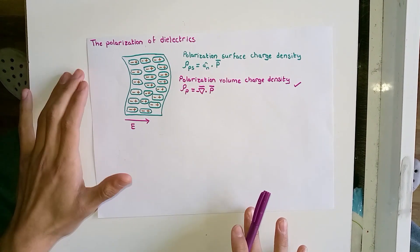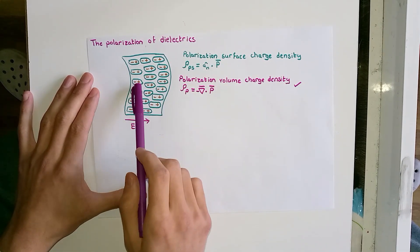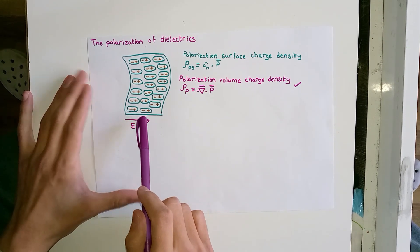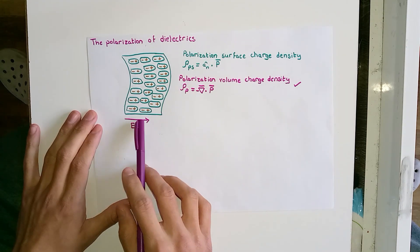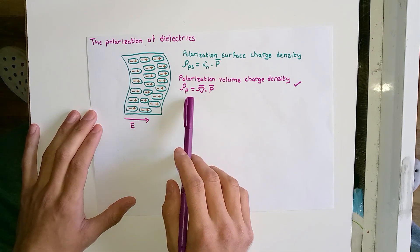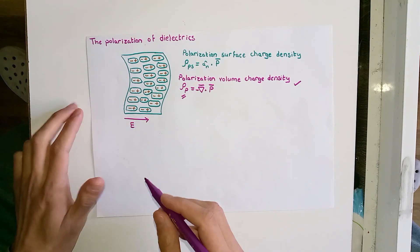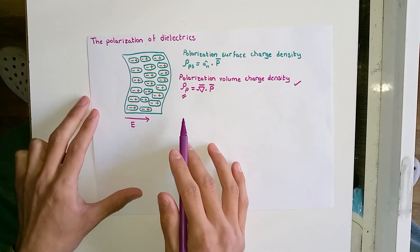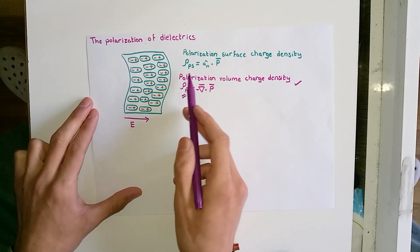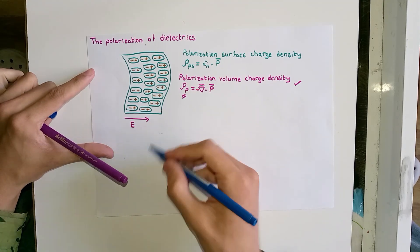When a dielectric undergoes the effect of an external electric field, the molecules will be aligned such that a large dipole moment is constructed inside the dielectric. This phenomenon is known as polarization. Polarization gives rise to two types of charge density: a volume charge density within the bulk of the dielectric material, and a surface charge density localized at the interface between the dielectric and the adjacent material, such as free space.